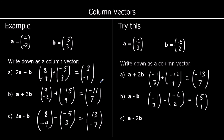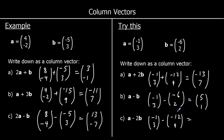And C: A take away 2B. I write down A, and I'm going to take away 2B, which is negative 12, 4. So negative 1 take away negative 12: negative 1 plus 12 is 11. And 3 take away 4 is negative 1.